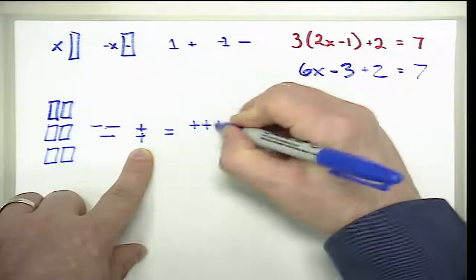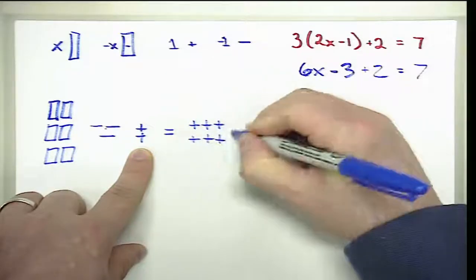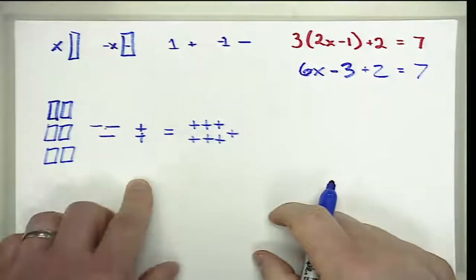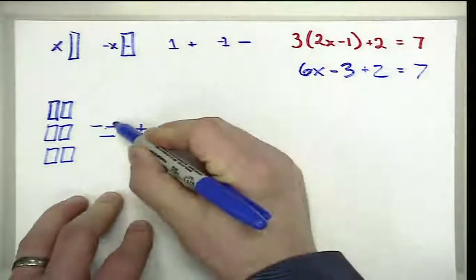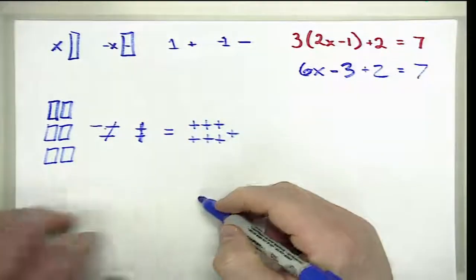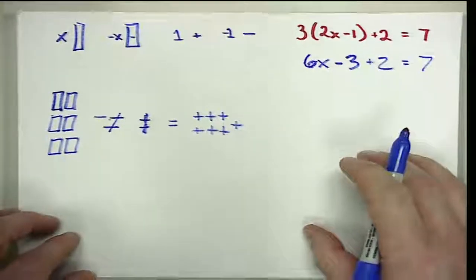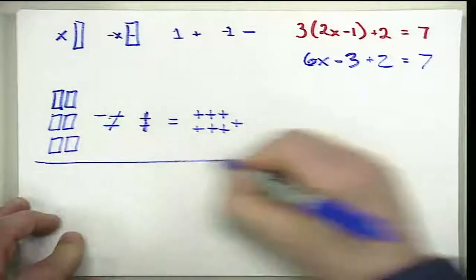Should be one, two, three, four, five, six, seven positives. We can simplify the expression on the left hand side by eliminating our zero pairs, and then we have to redraw.